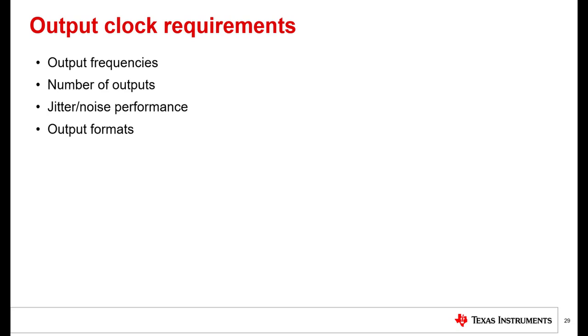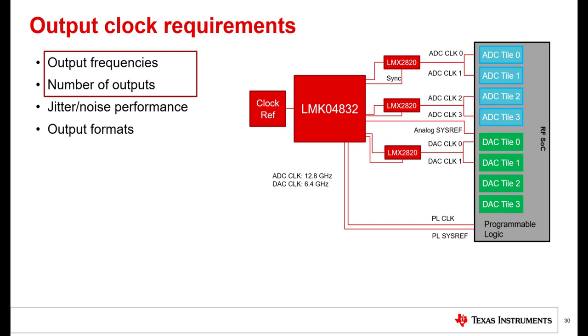The next topic is understanding the output clock requirements, which can be broken down to the output frequencies needed, the number of outputs needed for each frequency, the output format of each clock, and the performance of each clock. Let's take a closer look. In this example, the RF-SOC requires four ADC clocks and two DAC clocks, which adds to six clocks at two different frequencies. It also requires two other clock frequencies, a PL clock for its programmable logic interface, as well as a lower-frequency PL-SYSREF clock for clock synchronization. In this example, the LMX2820 is added because the LMK04832 cannot generate high enough frequencies for the ADC or DAC tiles of the RF-SOC.